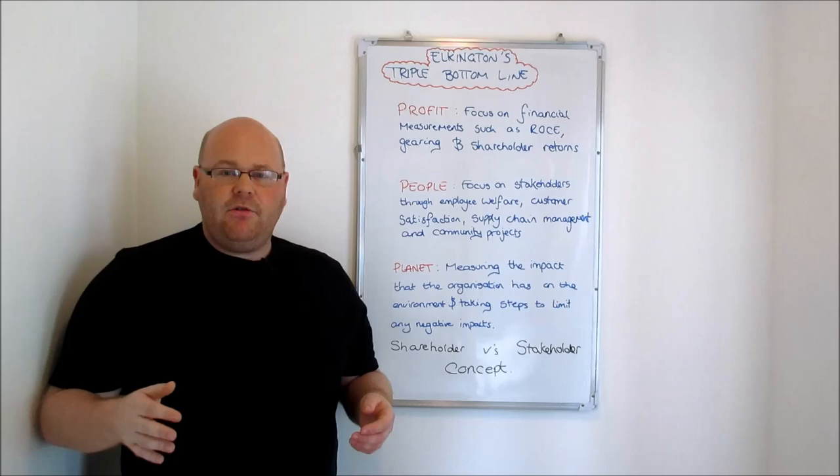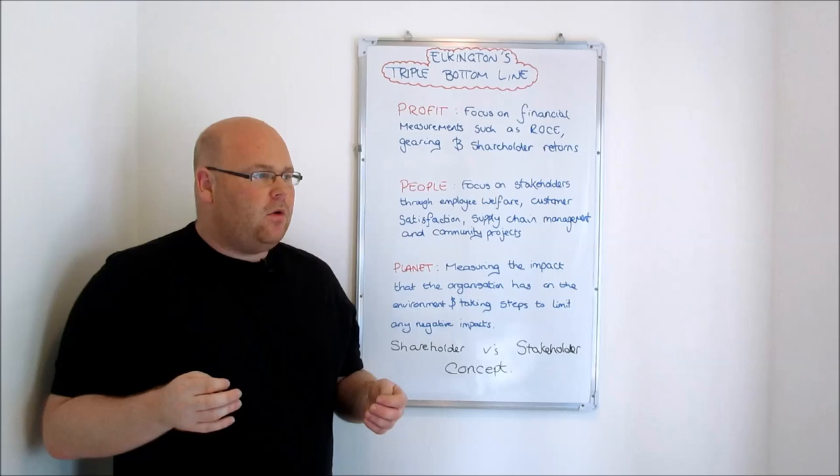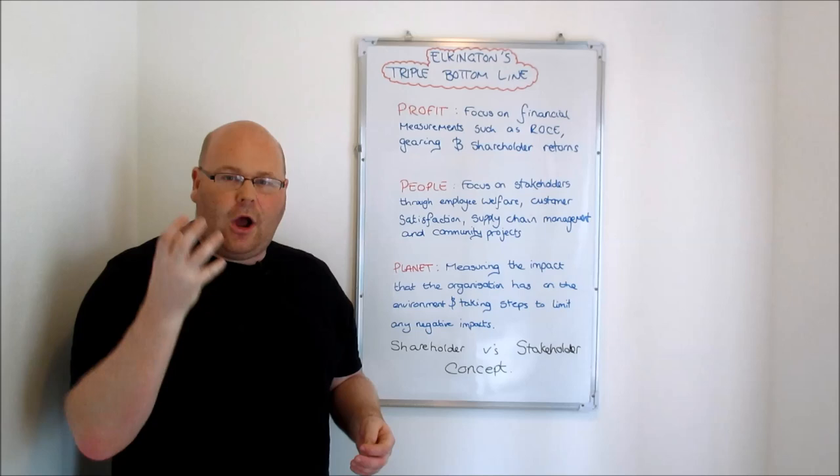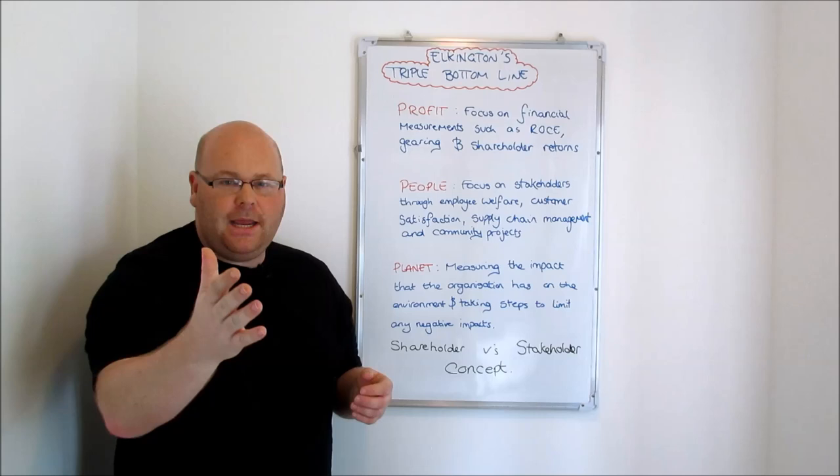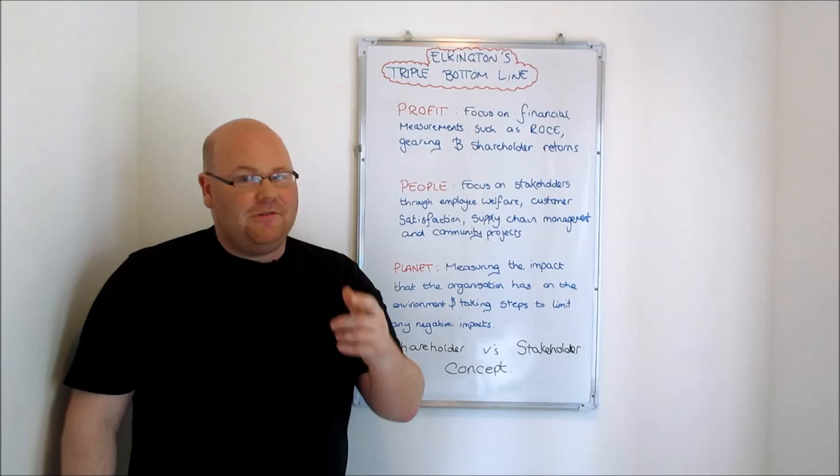So this theory became known as Elkington's Triple Bottom Line - not just worrying about the bottom line of financial documents like balance sheets and income statements, but also worrying about other aspects that are now important to society, such as people and planet as well. So that's Elkington's Triple Bottom Line, that's another revision topic ticked off for you. We'll see you soon for the next tutorial. Keep on taking the biz.